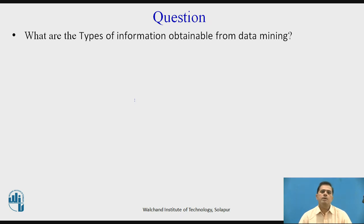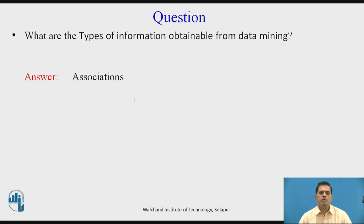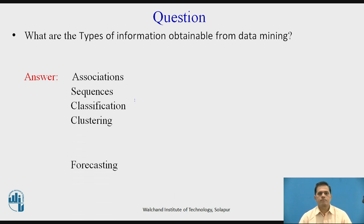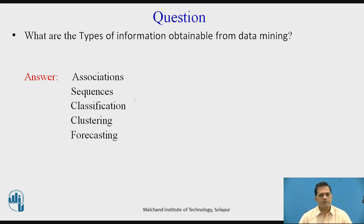Based on this discussion, there is a question: What are the types of information obtainable from data mining? The answer is associations, sequences, classification, clustering, and forecasting. There are five types of information obtainable from data mining, and these data mining tools are used in business intelligence.